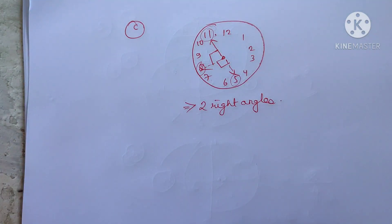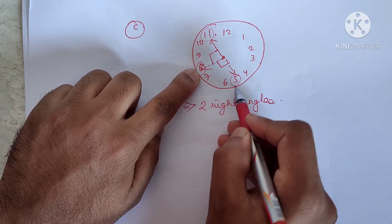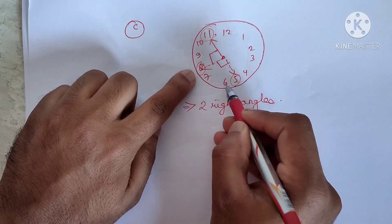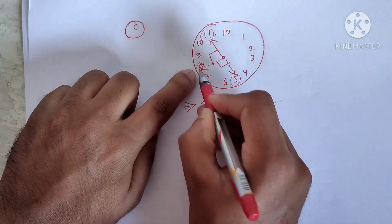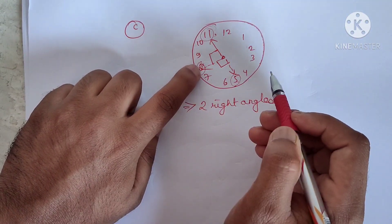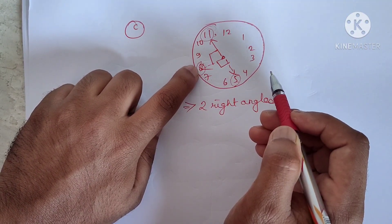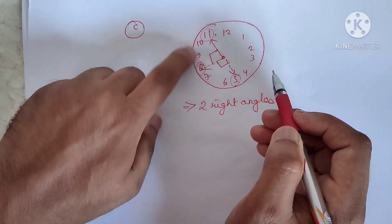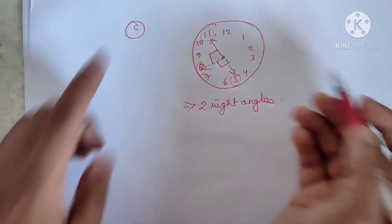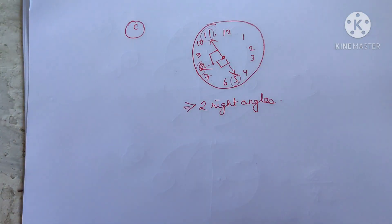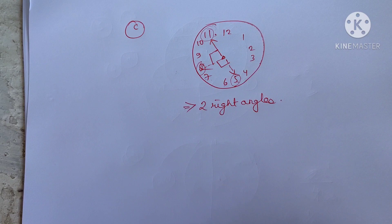For part (c) we have two right angles. Try the remaining ones — (d), (e), and (f) — yourself. The rule is simple: from where you start, count four each time. Two right angles — easy! What is number six?